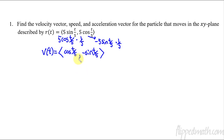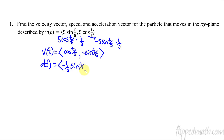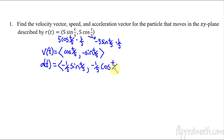Now let's find the acceleration vector. The derivative of cosine is negative sine, and we again multiply by the derivative of the inside, giving negative 1/5 sine(t/5). For the y component, the derivative of negative sine is negative cosine, times the inside derivative 1/5, giving negative 1/5 cosine(t/5). So there is our velocity vector and our acceleration vector.